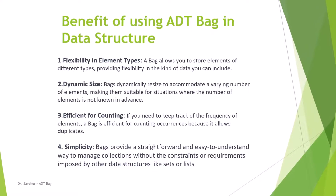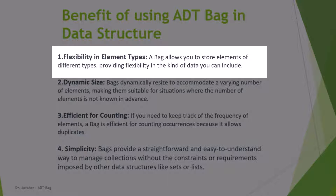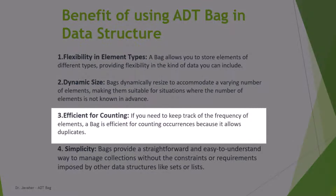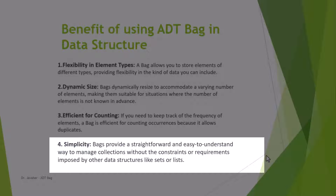Here are some of the benefits of using ADT-Bag in data structure. First, flexibility in element types: a bag allows you to store elements of different types, providing flexibility in the kind of data you can include. Dynamic size is another important benefit — bags dynamically resize to accommodate a varying number of elements, making them suitable for situations where the number of elements is not known in advance. They're also efficient for counting: if you need to track the frequency of elements, a bag is efficient because it allows duplicates. Simplicity is another benefit — bags provide a straightforward way to manage collections without constraints imposed by other data structures like sets or lists.